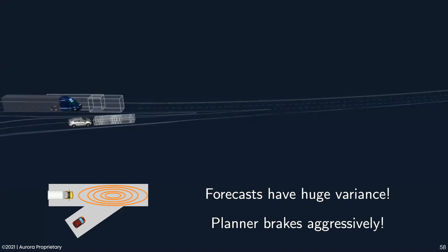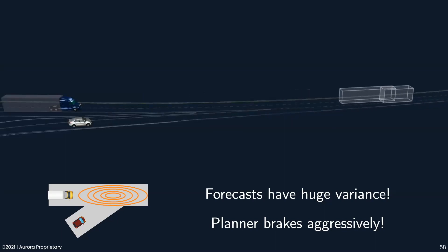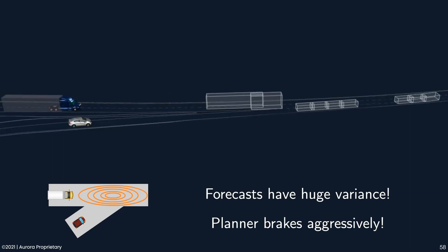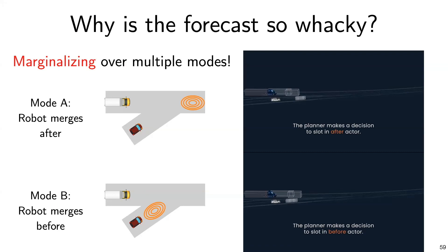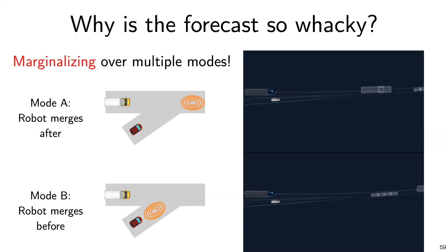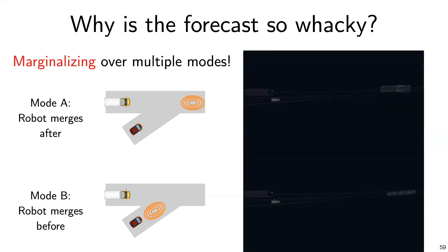When training data is 50% 'merge after the car' and 50% 'merge before,' the forecast model produces one huge blob with large variance spread across the robot's front — so the planner has no choice but to brake heavily. The problem: we're averaging over two distinct modes. Mode A: robot merges after, slowing down and letting the car go. Mode B: robot merges before, speeding up while the car slows. Averaging over these modes leaves the planner with no useful signal.